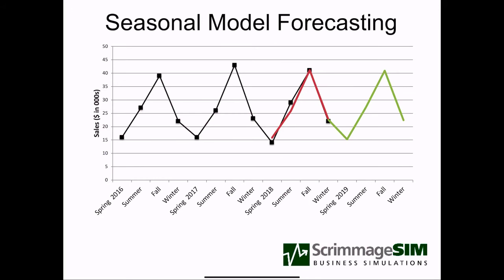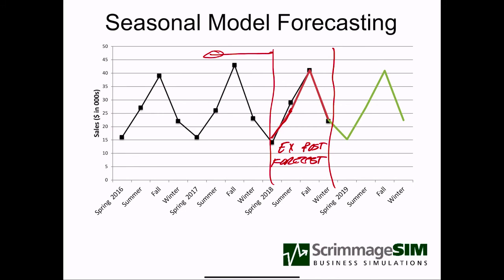In this example, we have three years worth of data. The first two years are used to initialize the model. Then we have what's called the ex-post forecast period, where we have extra data so we can try making forecasts — shown as a red line — and compare them to our actual data. The fit should be pretty good. If we have any confidence in our true forecast for the next year, shown as the green line, the ex-post period should fit well enough to be useful for planning.